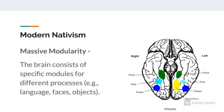Modern nativism is described by two different approaches. The first is massive modularity, which suggests that the brain has specific areas or modules that are responsible for different processes. One example is the fusiform face area, said to be responsible only for processing faces. Cognitive neuropsychology investigates this idea based on brain damage that results in loss of a specific area of the brain. When somebody has brain damage, researchers compare what capabilities they've lost, what they can still do, and the part of the brain that has been lost — this way, they get an idea of what part of the brain was responsible for whatever action was lost.